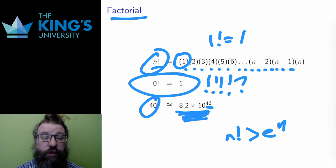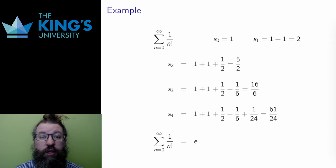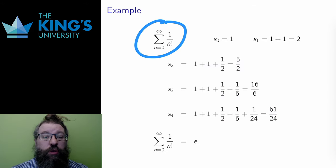Now that I know this factorial, I can define this sum. The sum of the reciprocal of factorials. This starts at 0, which will work since 0 factorial equals 1, and let me look at the partial sums. S0 is 1. S1 is 1 plus 1, which is 2. S2 is 1 plus 1 plus 1 half, 1 over 2 factorial. That gives me 5 halves.